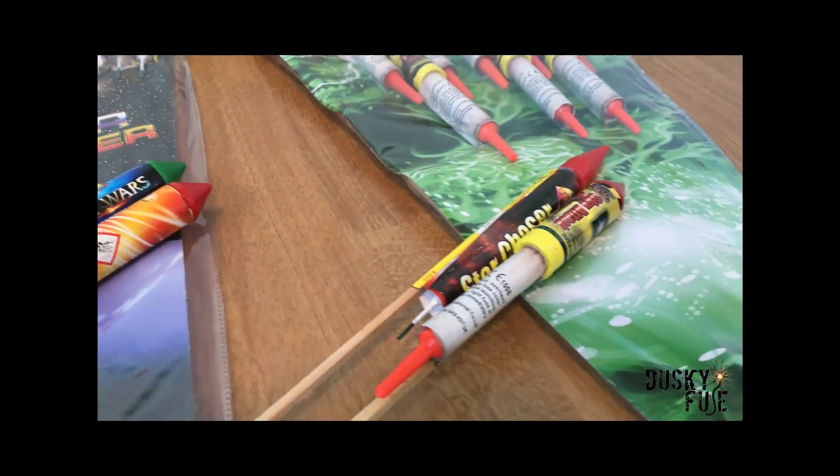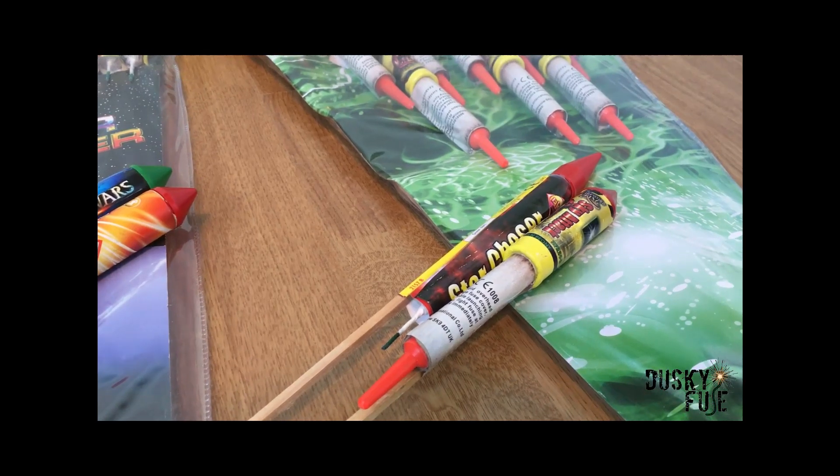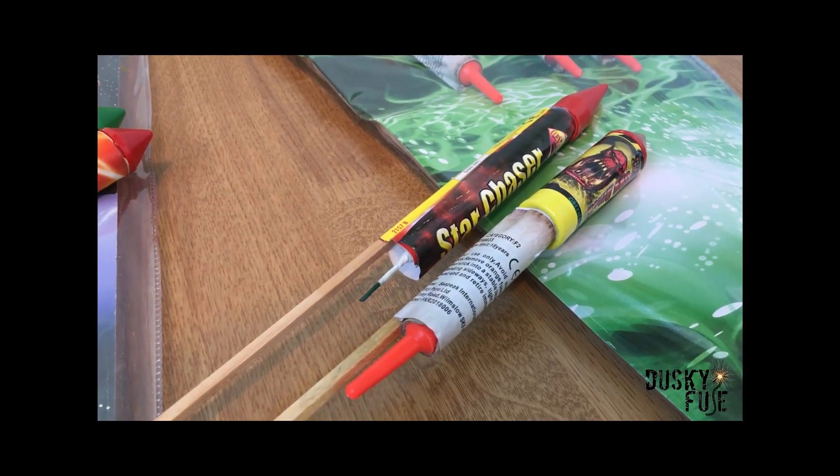In the 1.4G corner we have a Firework King Skyattack rocket. Again it has a Green Peony and 14 grams of powder.